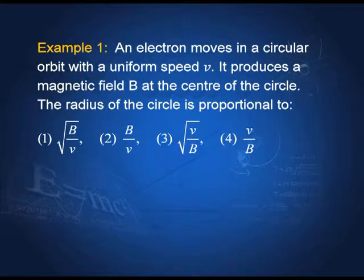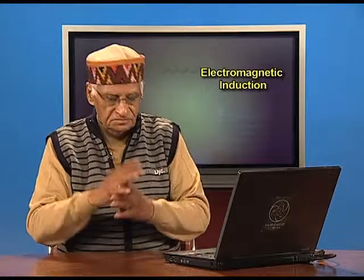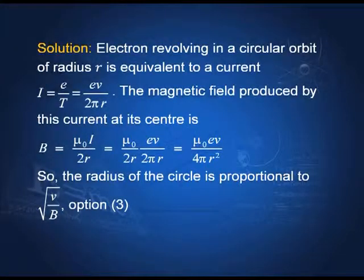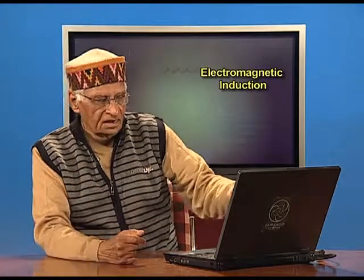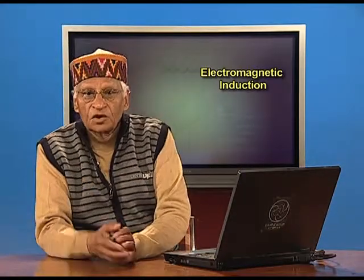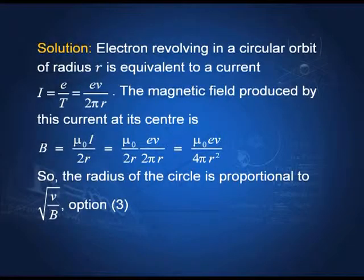An electron moving in a circular orbit is equivalent to a current. The magnitude of the current is e/t, where e is the charge and t is the time period. If v is the velocity, then t equals 2πr/v, since 2πr is the circumference and v is the velocity. Therefore, the time to complete one orbit is 2πr/v, and the current is i = ev/2πr.